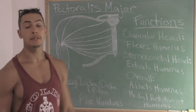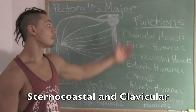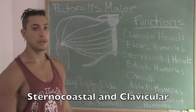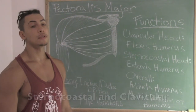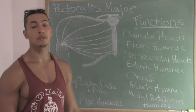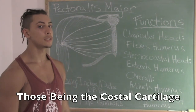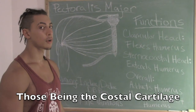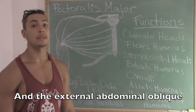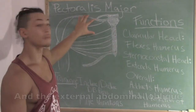The pectoralis major has two heads: the clavicular head and the sternocostal head. The sternocostal head originates from the sternum — it also has two other points of origin, but for the sake of this video, the sternocostal head originates from the sternum, whereas the clavicular head originates from the clavicle.